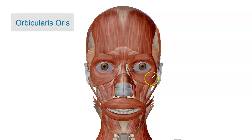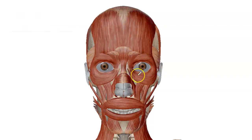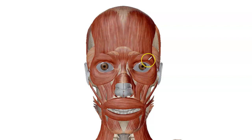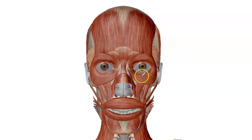There's another muscle orbiting the eye — this one is also called the orbicularis muscle, but we're going to change the second part of the word to oculi. So in complete, we call this the orbicularis oculi.